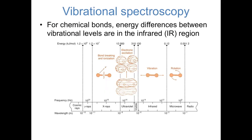It's always good to have the big picture in our minds of what types of light correspond to what types of transitions in molecules. Typically, the absorption of X-rays corresponds to the breaking of bonds and ionization. Ultraviolet and visible photons lead to electronic excitations. The absorption of infrared light leads to vibrational excitations, and the absorption of microwaves leads to rotations.